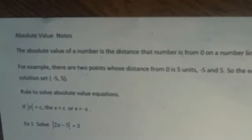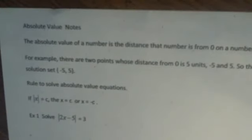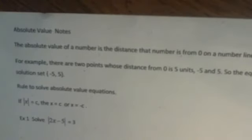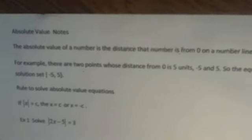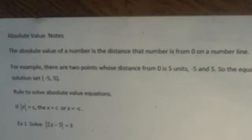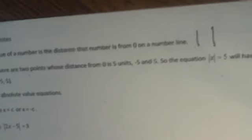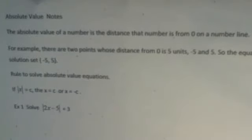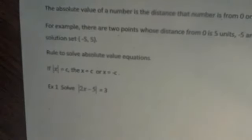So the absolute value of a number is a distance that a number is from zero on a number line. That's what it represents. You have a symbol for absolute value. It's these two lines here. And so, you know, if I asked about how many points there are whose distance from zero is five, there are two of them. Negative five is five units away from zero and so is five. So therefore, absolute value equations have two solutions. So the absolute value of x equals five will have the two solutions or the solution set negative five and positive five.